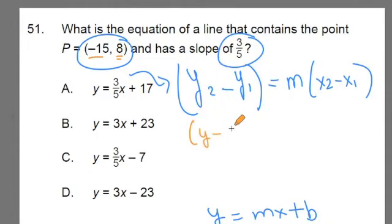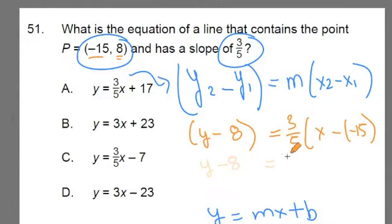Is equal to m, that's my 3 fifths, times x minus a minus 15. That's my value for the x coordinate. All right, let me simplify this a little bit. This is y minus 8 is equal to, now this would be 3 fifths times x minus a minus 15. That's x plus 15.